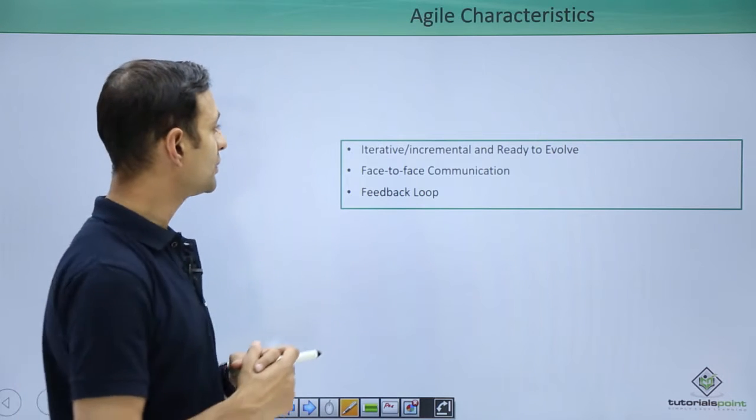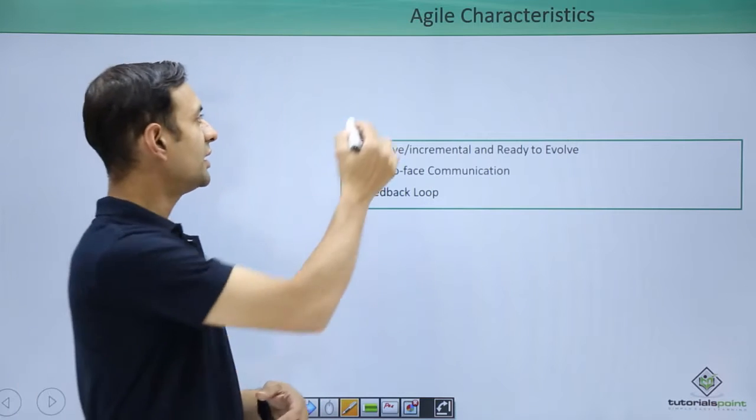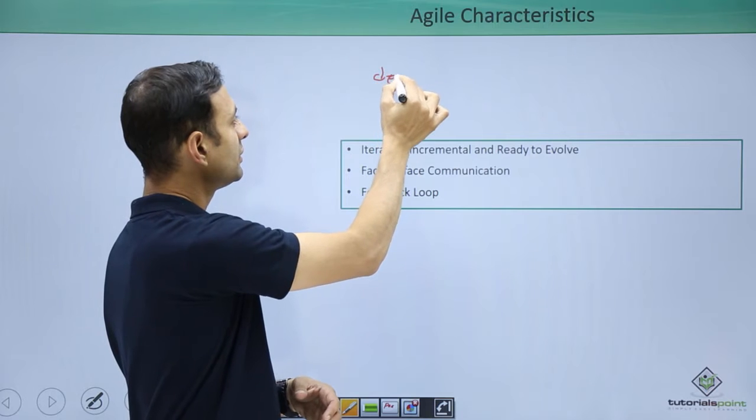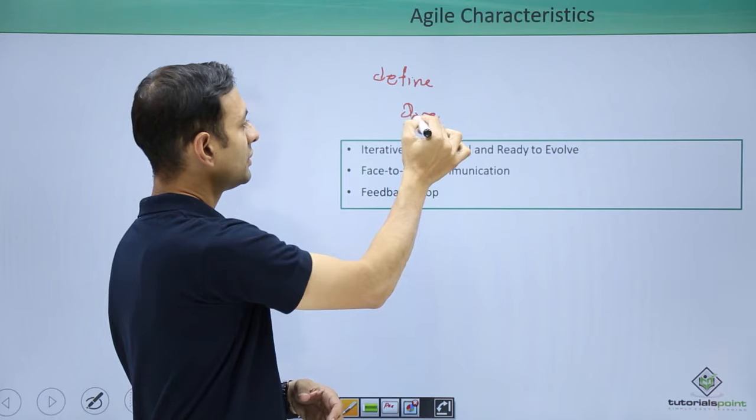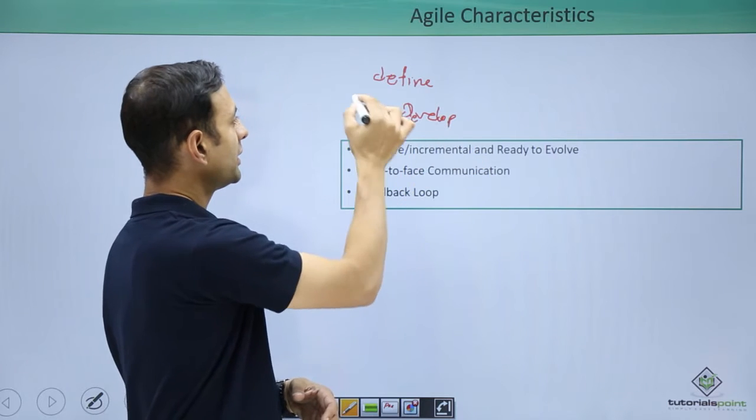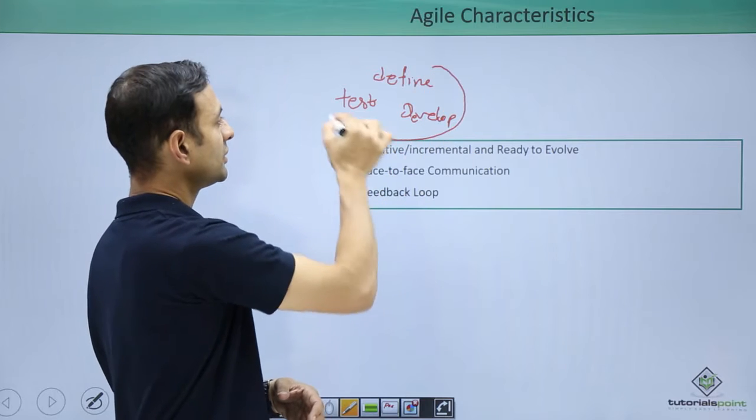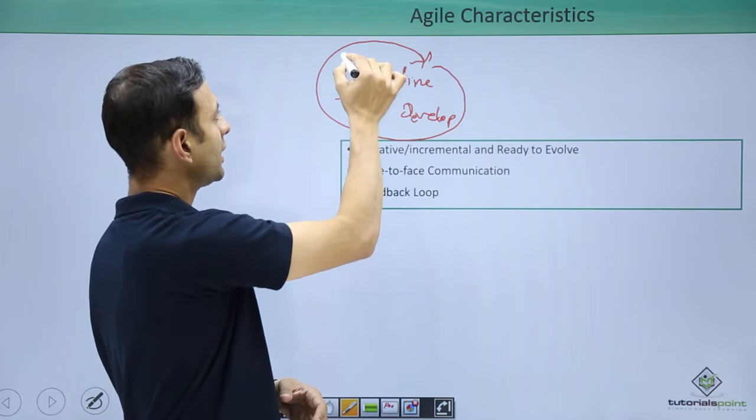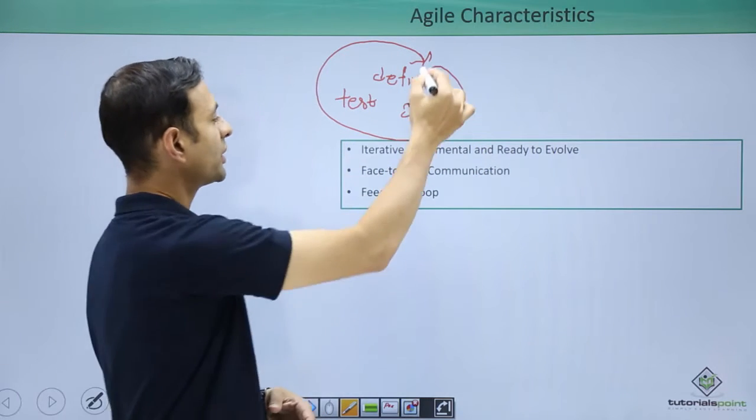It's iterative, incremental, and ready to evolve. Say I have a first iteration where I am going to define, develop, and test. So this is my one cycle. After testing, again I am going to review, develop, test - so one iteration. It's an iterative model.